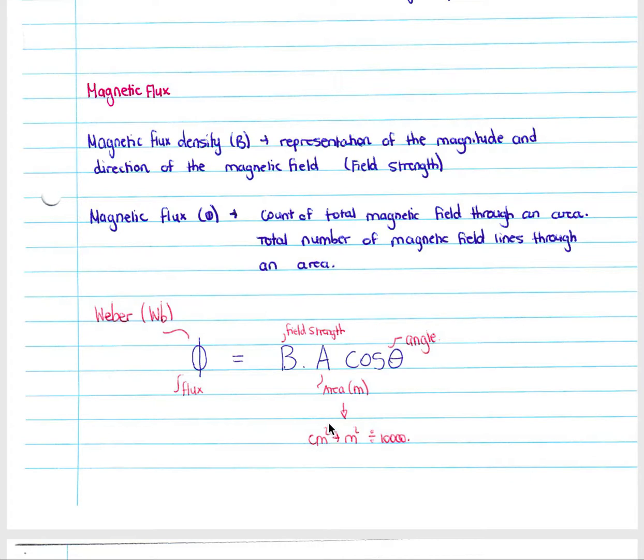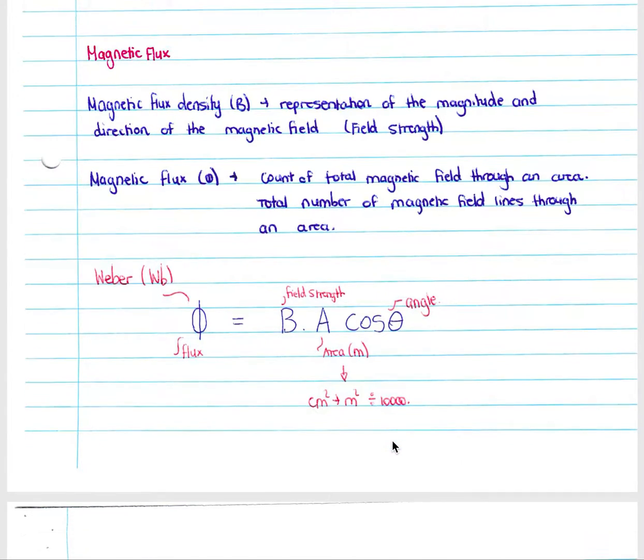If they ever give you your area in centimeters squared, to convert to meters squared, you simply divide by 10,000.